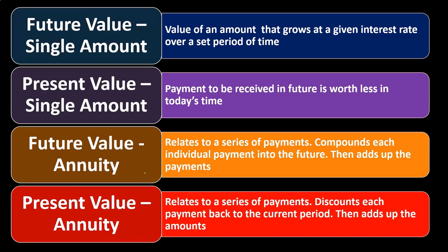Then we have the present value of an annuity, which also relates to a series of payments. It discounts each payment back to the current period, then adds up the amounts. So now we're thinking about a series of payments — $1,000 going in each time — but we're trying to bring those future payments back to the current day, not project out where we'll be in the future.